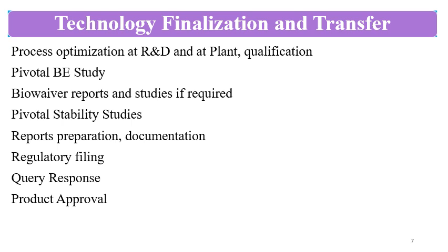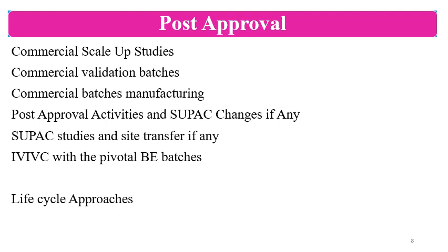After regulatory filing, depending on the regulatory body, queries will come in, the regulatory body will ask for responses to those queries, and then query responses are submitted. After completion of all this activity, the product gets approved by the regulatory body. Once the product is approved, the commercial launch activity starts. If required, commercial scale-up batches are taken, because exhibit batches are typically around 100,000 to 150,000 units, and if the commercial batch size is higher, commercial scale-up is also performed. Then commercial validation batches are taken, commercial batches are manufactured, tested, and sent to the market.